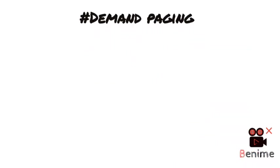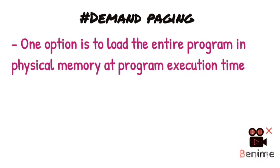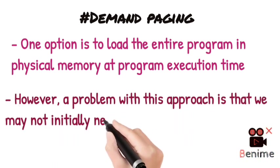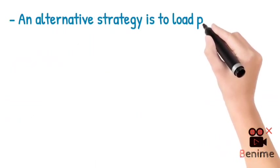First, let's look at how we load an executable program from disk into memory. One option is that we load the entire program in physical memory at execution time. The problem with this approach is that we don't need the entire program in memory. Suppose there is a list of 10 options — if we only need 5, the other 5 are unused, causing space and time problems.